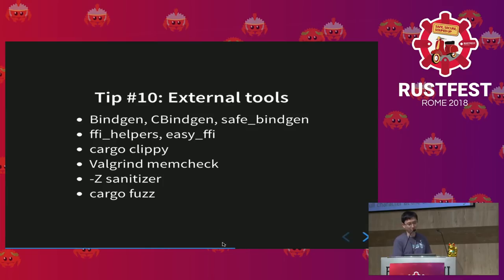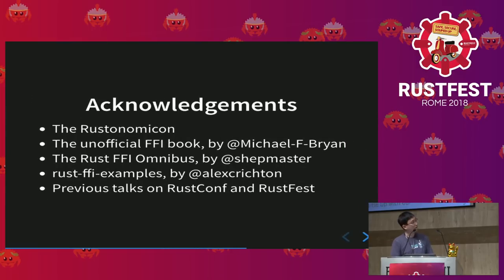Here are some external tools we find useful when writing Rust FFI code. I always use Valgrind to find memory leaks caused by improper use of Box::into_raw. Cargo Clippy often gives surprises about writing idiomatic Rust code and helps avoid unnecessary unsafe code. The Rust Nomicon is definitely a must-read, and Michael Brown's FFI book provided useful insights into error handling in Rust and C, plus tips about integrating Cargo into the CMake build system. Thanks also to previous talks at RustFest and RustConf.